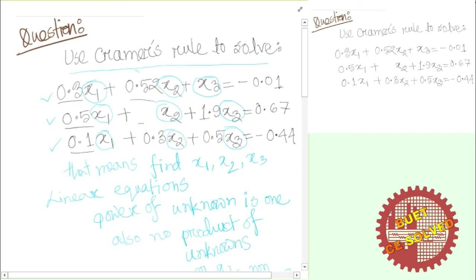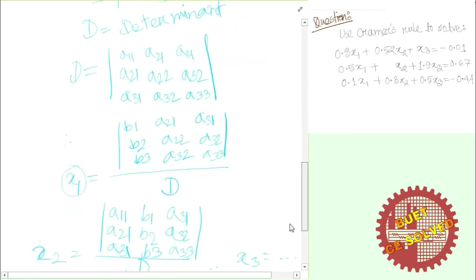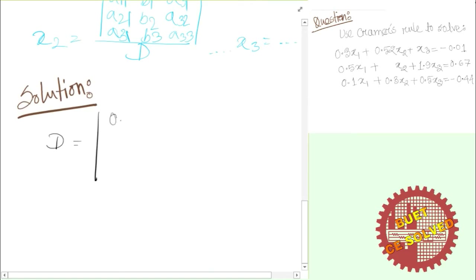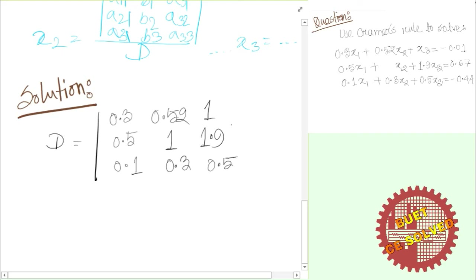We are going to show the 3×3 example. The coefficient matrix has elements: 1.3, 0.5, 0.1 in the first row; 0.5, 2, 1 in the second row; 0.3, 1, 1.9 in the third row. The right-hand side values are 0.5, 0.53. We now compute the determinant D of this matrix.